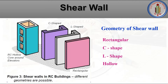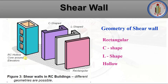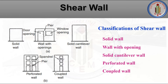Regarding the geometry of shear walls, we have rectangular shape, G-shape, L-shape, and hollow shape. As you can see in the image, rectangular and L-shaped shear walls can be arranged accordingly. Around lifts or elevators, we can provide G-shaped or RC hollow core walls.